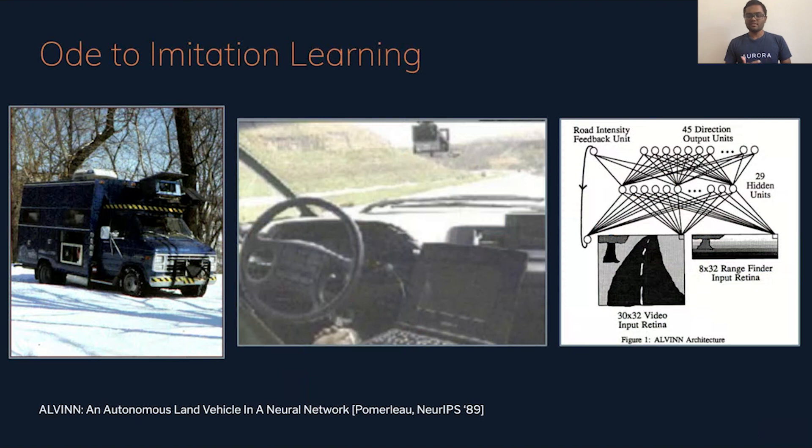So in this seminal work, Pomerleau shows that we can take an image of a 32 by 32 camera feed from the car and learn to produce steering angle as an output. So we have a neural network with 29 hidden units producing out 45 directional cases, so this is the steering angle, given the input from just a camera. This is a really cool piece of work and the basis of what a lot of what we do today in imitation learning in robotics.